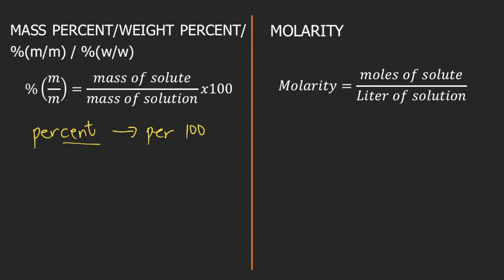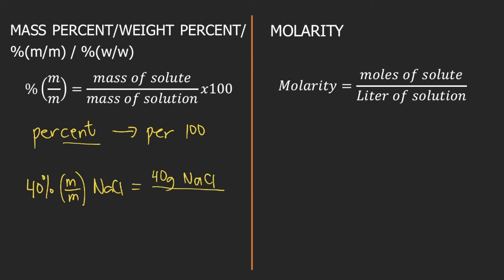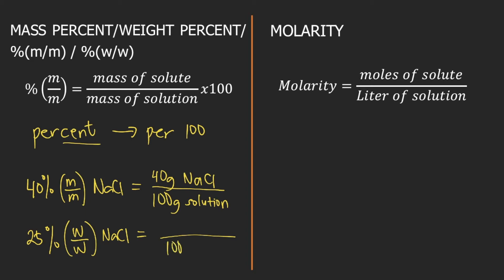For example, if you have 40 percent by mass of NaCl, this means you have 40 grams of NaCl per 100 grams of solution. Similarly, if you have 25 percent by weight NaCl, this means that per 100 grams of solution, it contains 25 grams of NaCl, which is the solute.